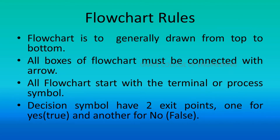Flowchart rules: A flowchart is generally drawn from top to bottom. All boxes of the flowchart must be connected with arrows. All flowcharts start with the terminal or process symbol. The decision symbol has two exit points — one for yes (true) and another for no (false).